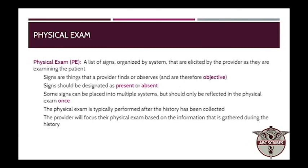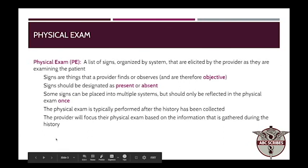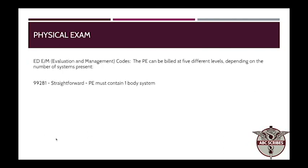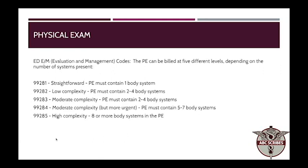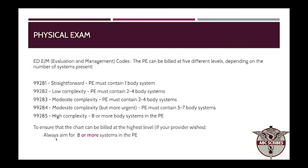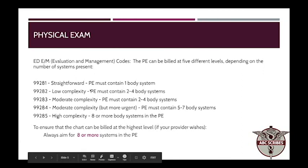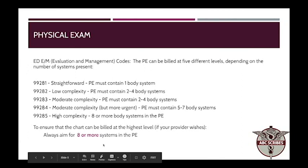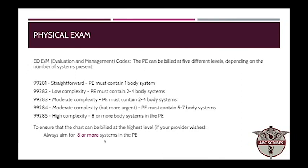Prior to jumping into how to successfully document a physical exam, it's important to know why we need to document one. We're back to our evaluation and management codes. As we've learned with the billable elements and the review of systems, there's a sliding scale of complexities. I want to draw your attention to the bottom — high complexity: eight or more systems. We're always aiming for the highest level of billing when appropriate, and the way our observable elements are built into the template, essentially if the physician walks into the room, you are able to bill to the highest complexity because they are observing eight systems.